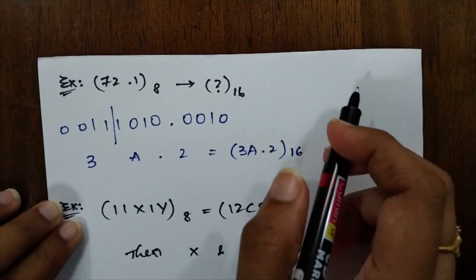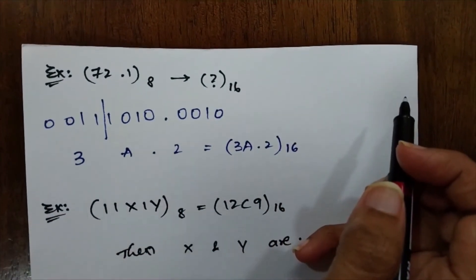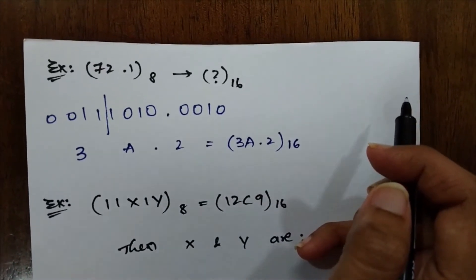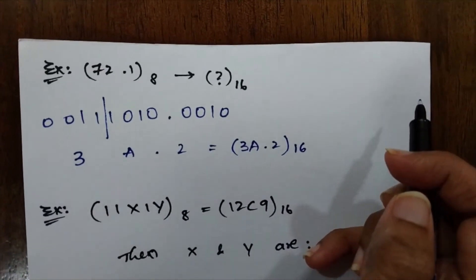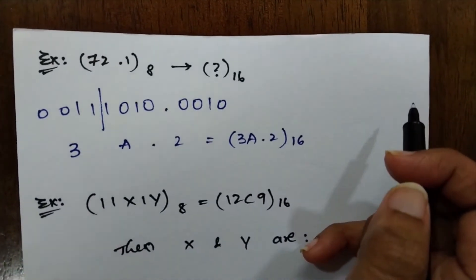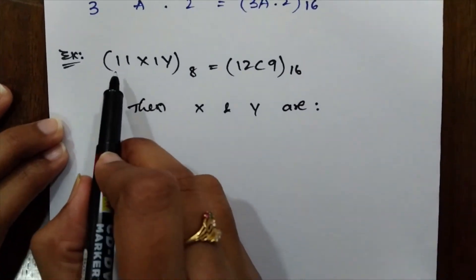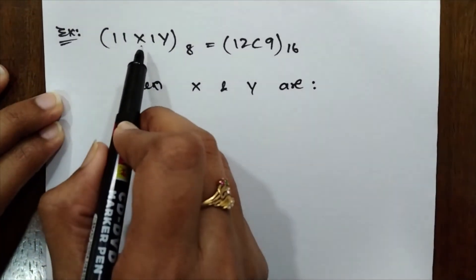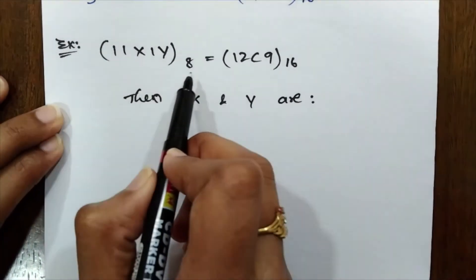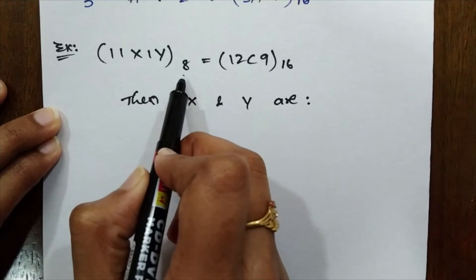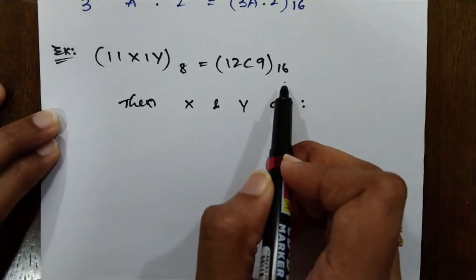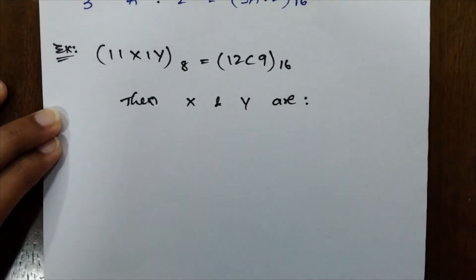So whenever you want to convert hexadecimal to octal or vice versa, first convert it into its binary — it will be much easier. Now let's consider another example: 11X1Y in octal is equivalent to 12C9 in hexadecimal.